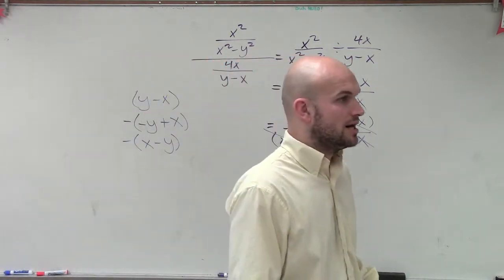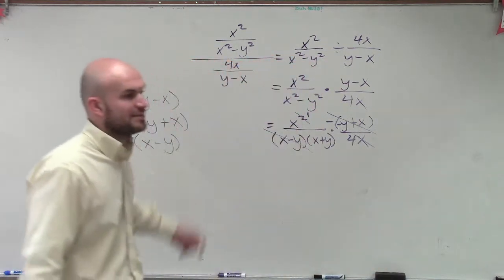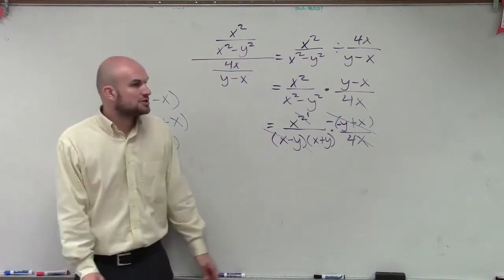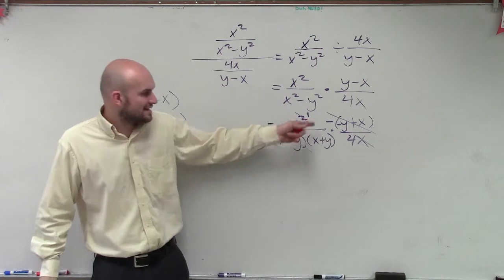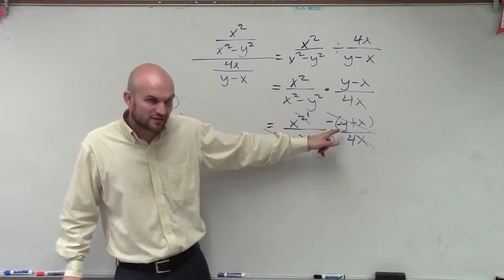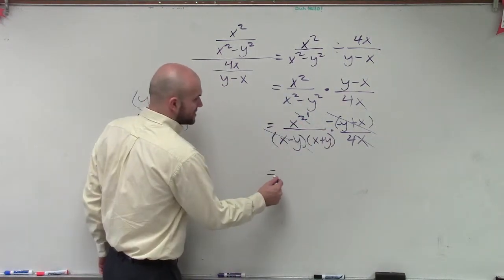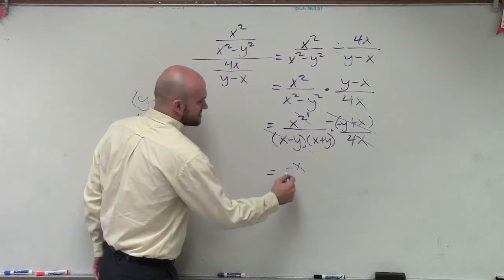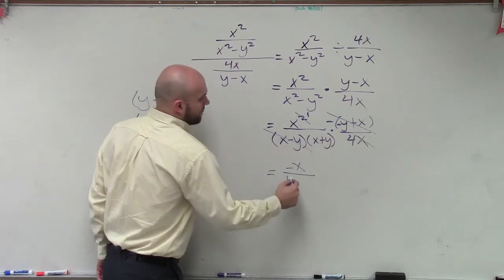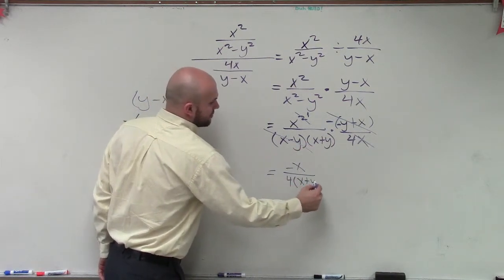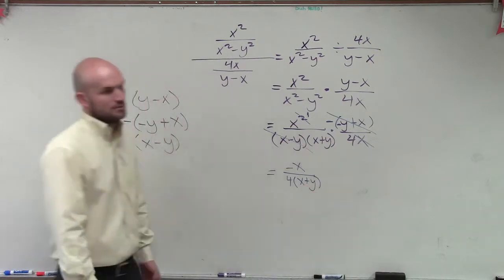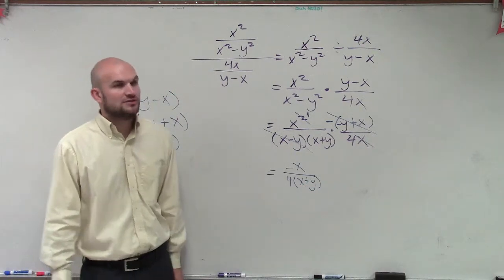Do you have to show that 5? Huh? Do you have to show that 5? No. That's just for me to explain to you guys where it came from. So now, instead of having an x, we have x times negative 1. So my final answer is going to be a negative x divided by 4 times x plus y. And that would be your final simplified version.